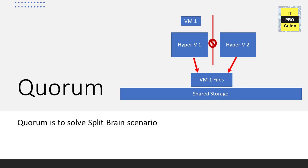Now let us learn about quorum in a failover cluster. If you are new to failover clusters, quorum might be a new term. There are cases where a network communication failure between nodes in the cluster may lead to a misunderstanding — more than one node will think it's time to take control of resources because the other node has failed. This could lead to shared resources being accessed by multiple hosts simultaneously. We call this scenario a split-brain scenario, and Microsoft introduced a mechanism called quorum to resolve it.